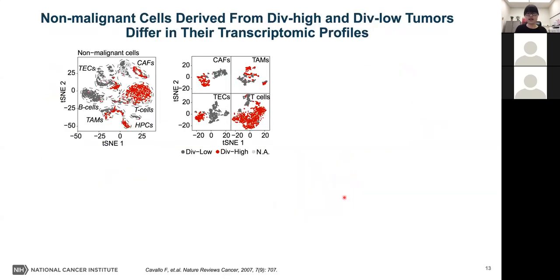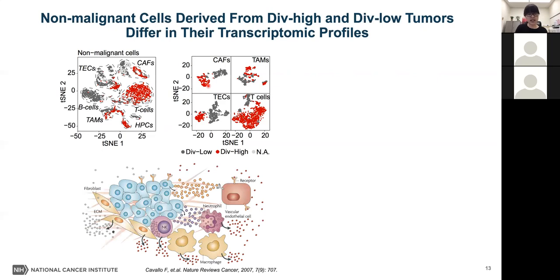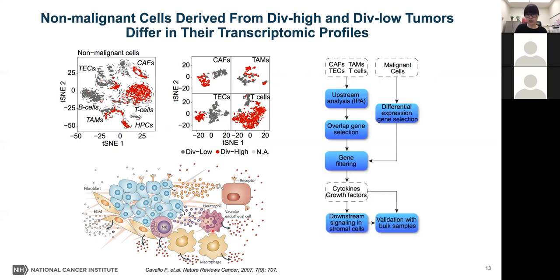Looking at non-malignant cells, I observed that non-malignant cells derived from high-diversity tumors and low-diversity tumors differ in their transcriptomic profiles, and this difference is further evident when individual cell types are analyzed. I then sought to determine whether high-diversity tumors secrete cellular factors that could induce tumor microenvironmental reprogramming. I developed a strategy to identify growth factors found upstream of at least three of the four cell types evaluated and selected those differentially expressed in high-diversity versus low-diversity tumors. Based on this strategy, vascular endothelial growth factor A, VEGFA, was identified as the top candidate responsible for tumor microenvironmental reprogramming.